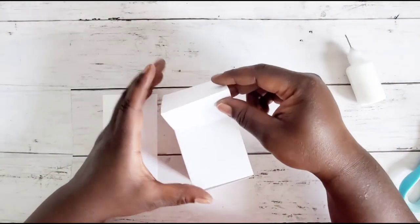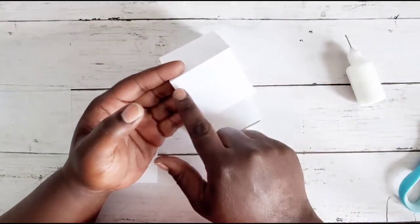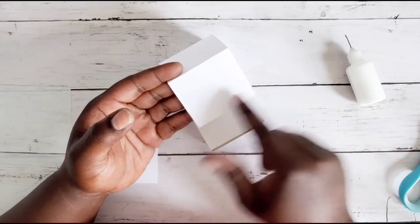Alright, and so we have a little folding mechanism. We are only going to apply glue just to this bottom part of the square.